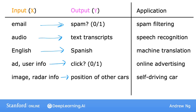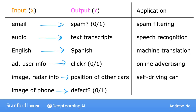Or take manufacturing — I've actually done a lot of work in this sector at Landing AI. You can have a learning algorithm take as input a picture of a manufactured product, say a cell phone that just rolled off the production line, and have it output whether or not there is a scratch, dent, or other defect. This is called visual inspection, and it helps manufacturers reduce or prevent defects in their products.